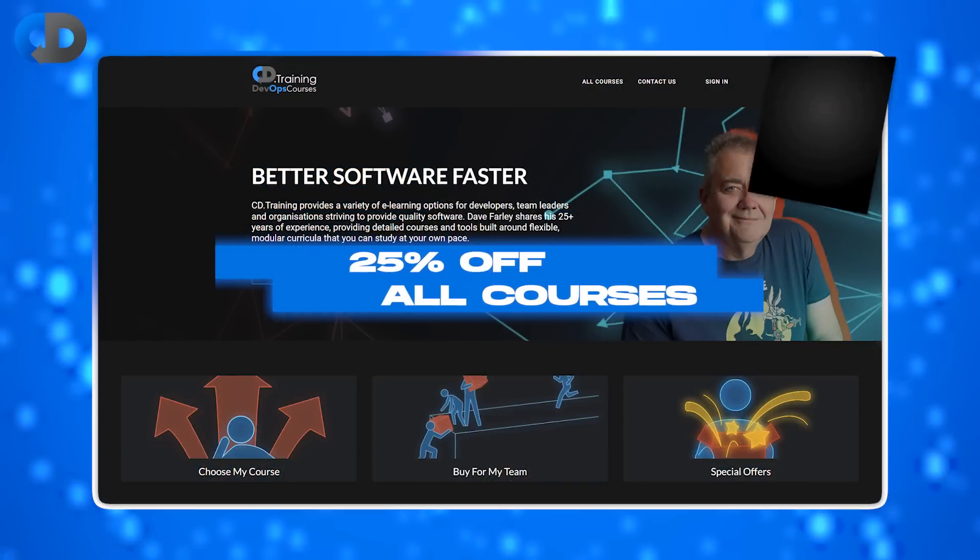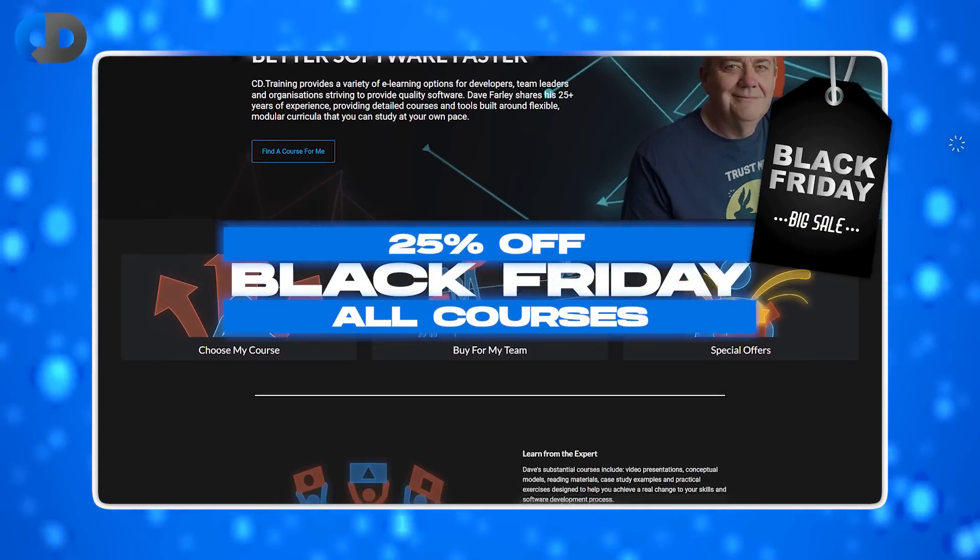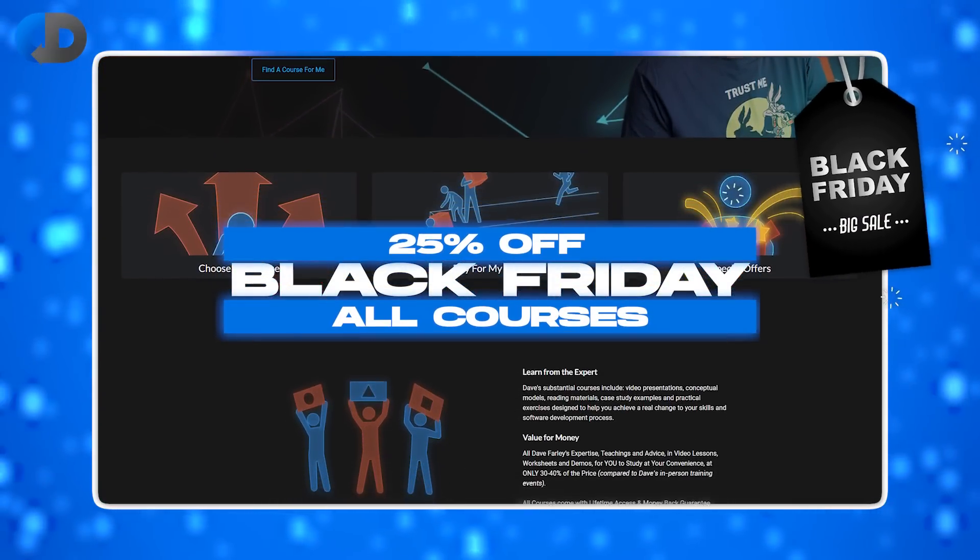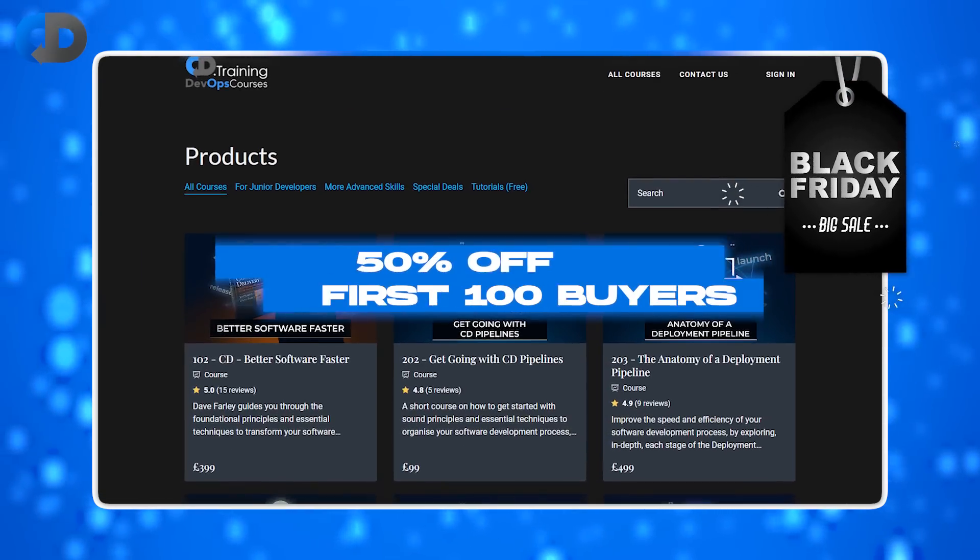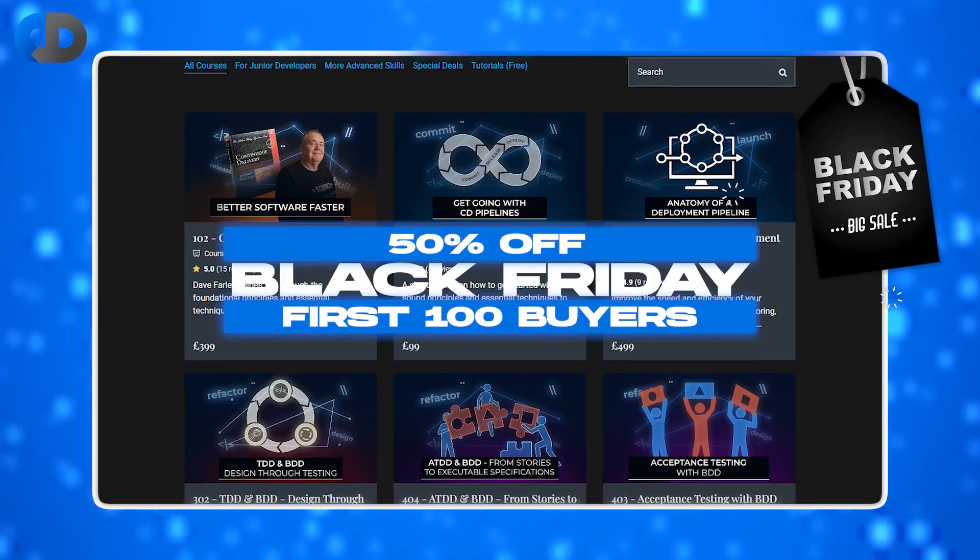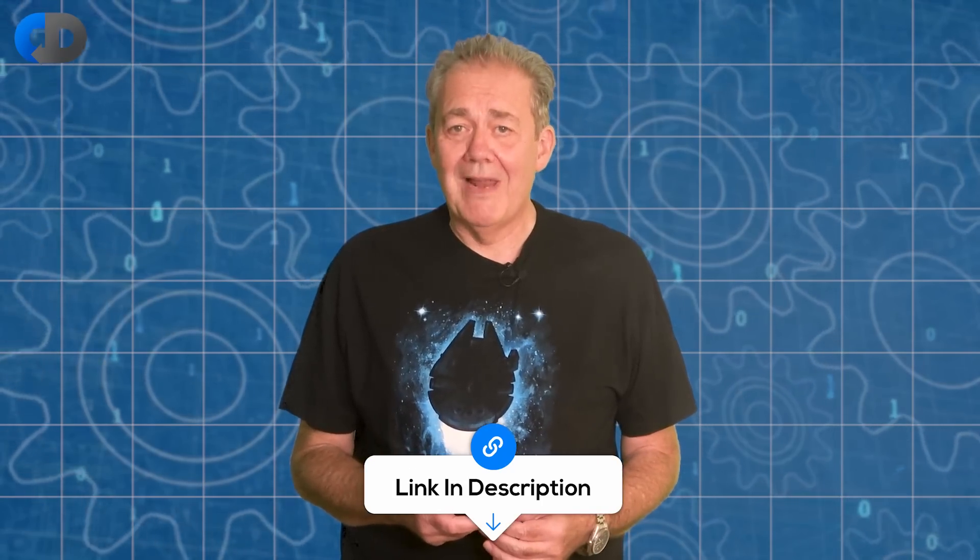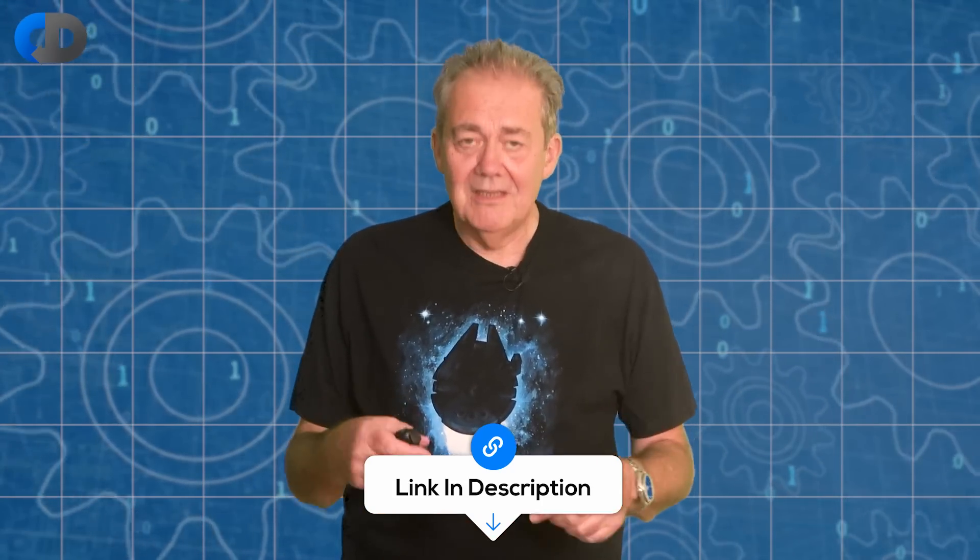Next week, we'll be launching a Black Friday sale. There will be 25% off all of our courses across the whole site. But there will also be an extra special offer of 50% off for the first 100 people who use the limited Black Friday coupon code. The coupons work on a first-come, first-served basis, and there are only 100. So do make sure to join the mail list to get early notifications of our Black Friday sale. There's links in the description below.